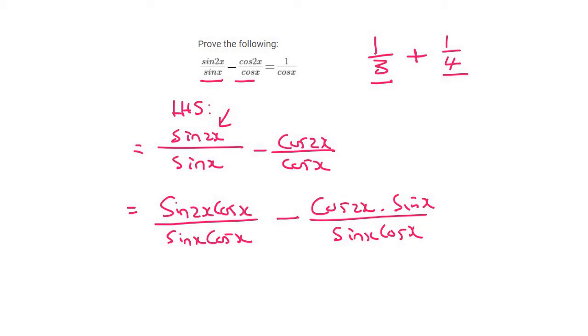Now because the denominators are the same, we can put everything together over one denominator. And so that's going to be sin 2x cos x minus cos 2x sin x.